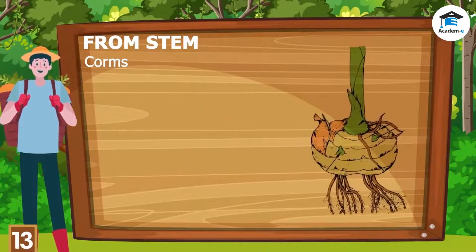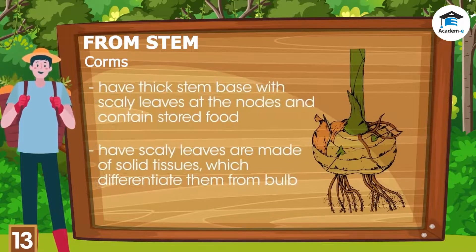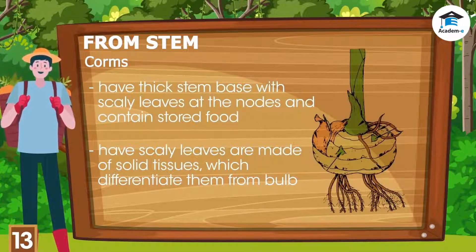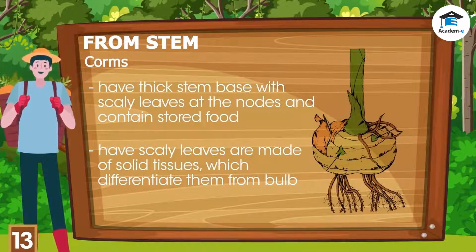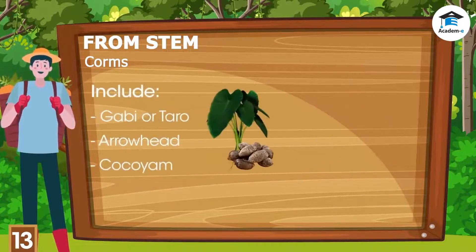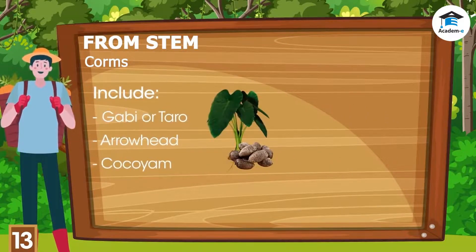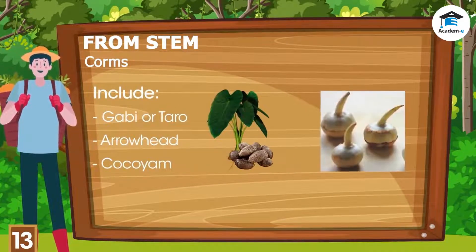Corms have a thick stem base with scaly leaves at the nodes and contain stored food. These scaly leaves are made of solid tissues, which differentiate them from bulbs. Plants with corms include gabi or taro, arrowhead, and cocoyam.